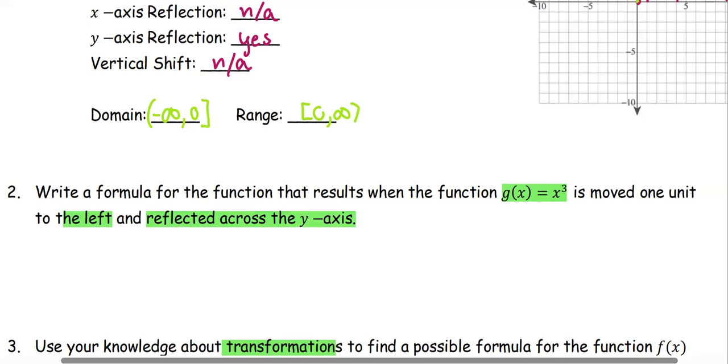We're starting with moving one unit to the left, which is (x - (-1))³, and then reflect it across the y-axis.